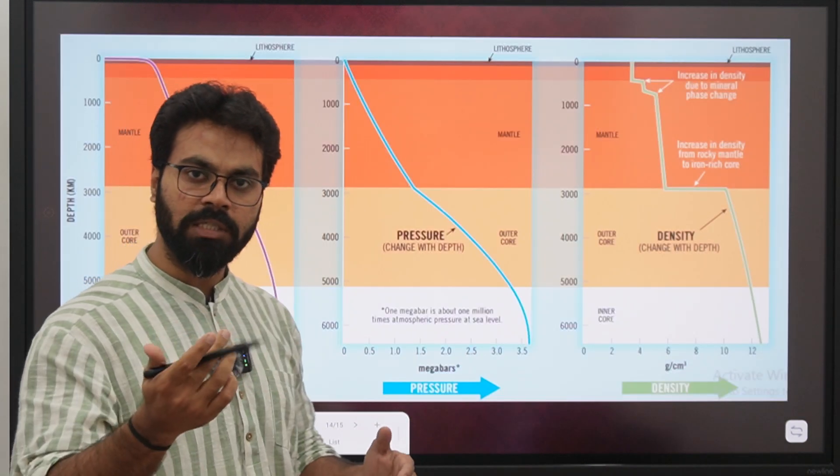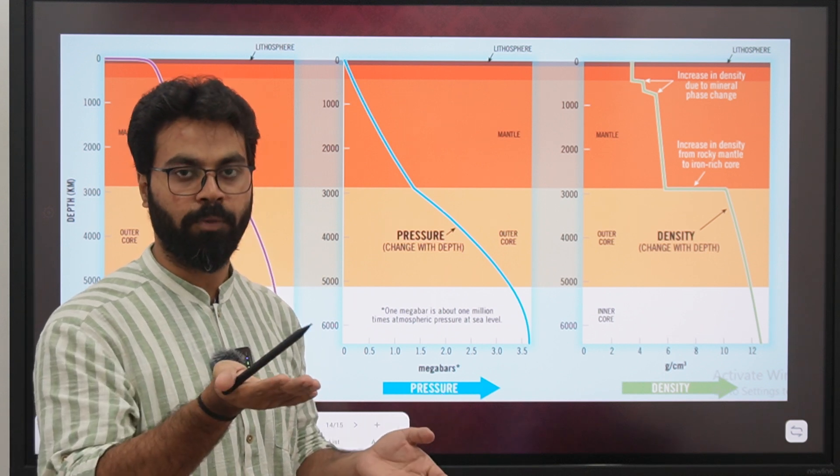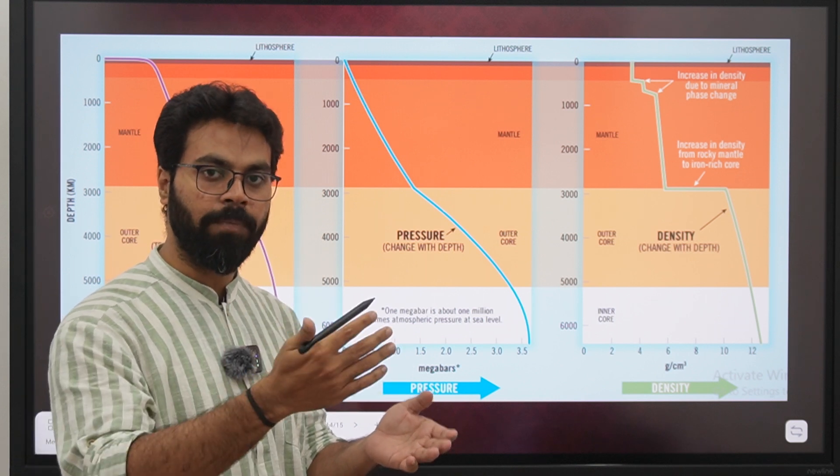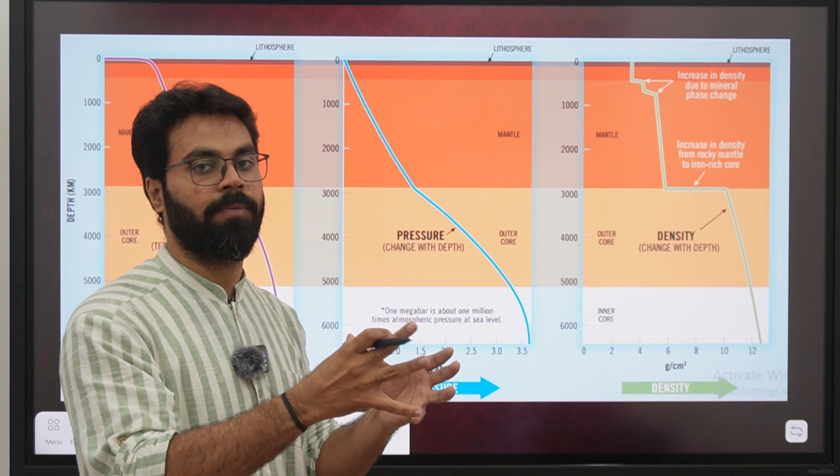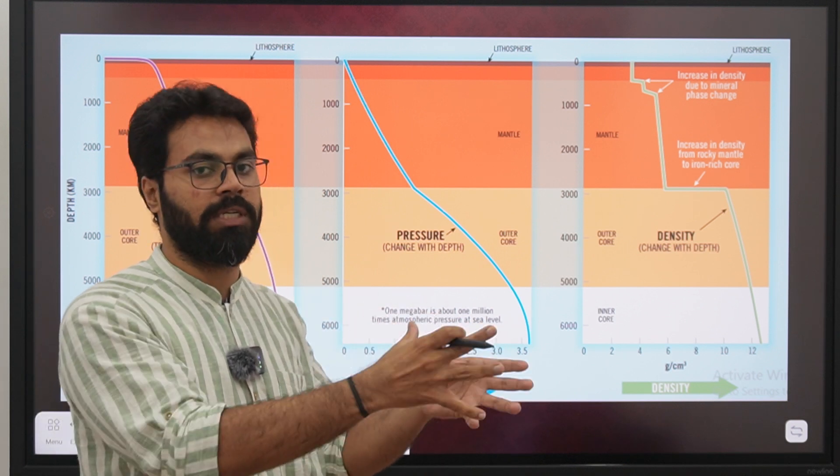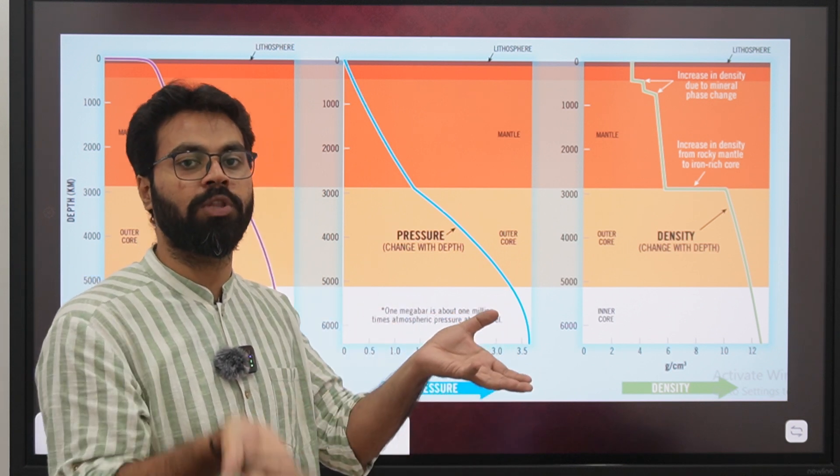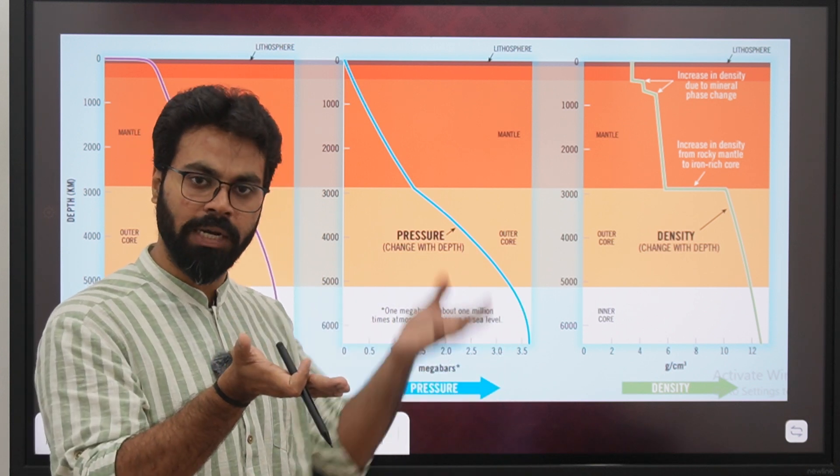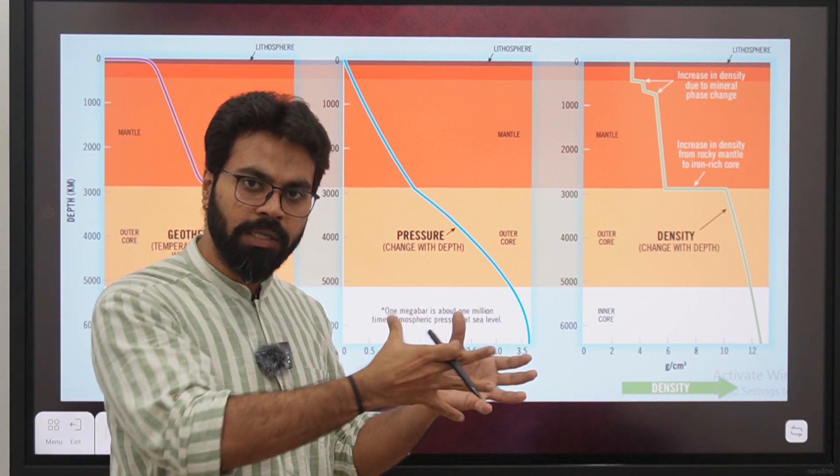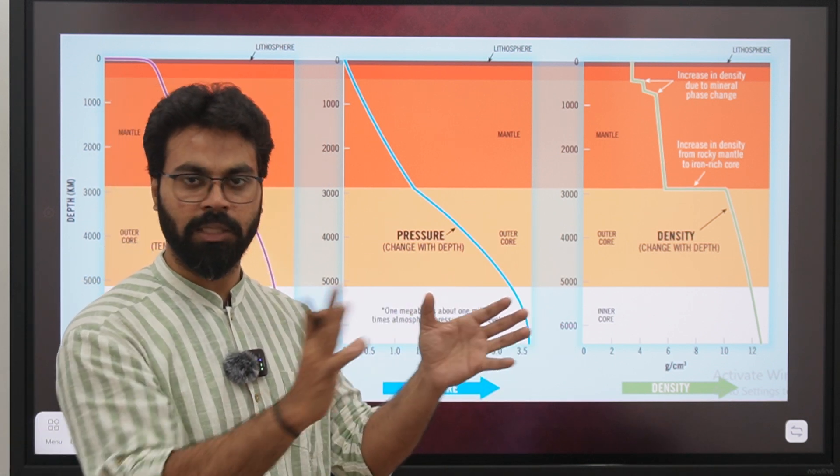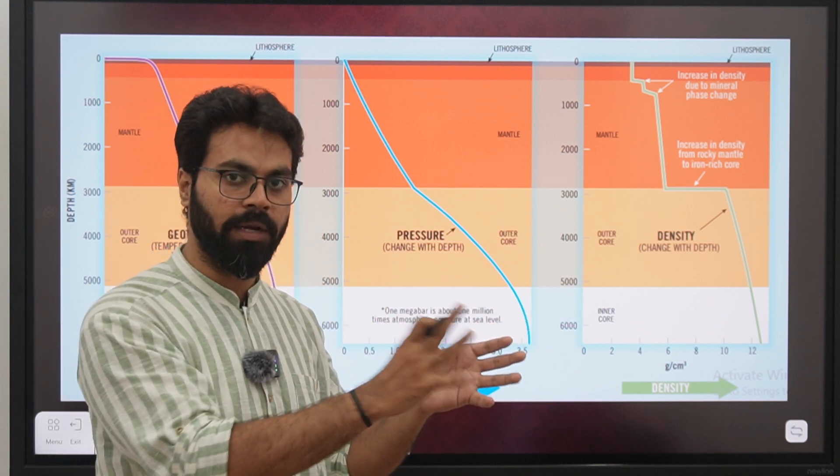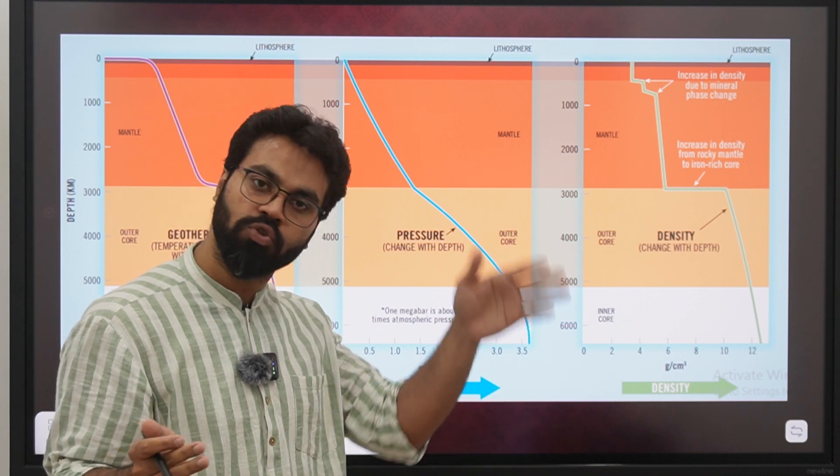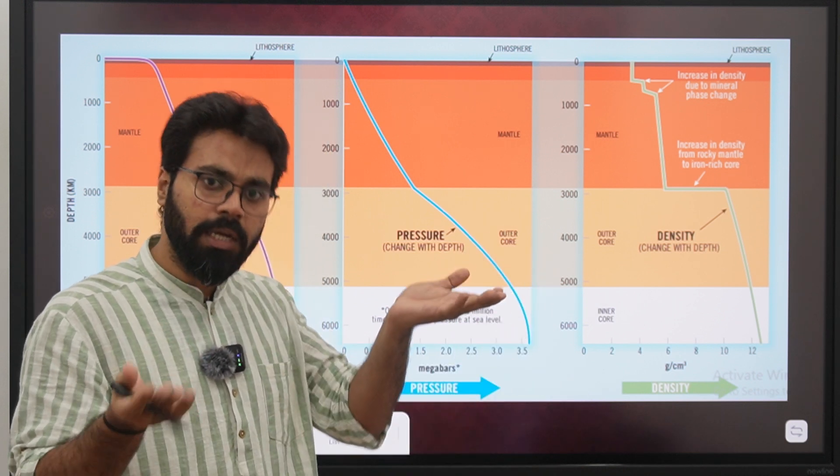Why? Because P-wave velocity is actually a function of several more factors. These seismic wave velocities are directly related to the resistance - resistance to what? To shear and compressional stresses. More the resistance, more the velocity. That is why P-wave velocities and S-wave velocities are more in solids as compared to liquids. And since shear stress is zero in liquids and gases, therefore S-wave cannot travel. More the rigidity, more the velocity.